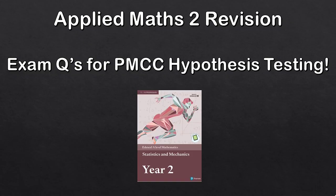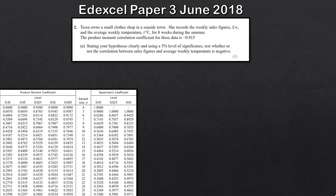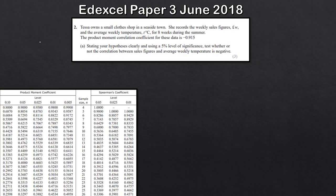Let's jump straight into the questions. This first question is from the new papers — it was the June 2018 Paper 3, the applied paper. It was the second question from the stats part. You will need your formula book for this; I've included the table here so we can see what we're looking for. It's only three marks because they do a lot of the work for you.